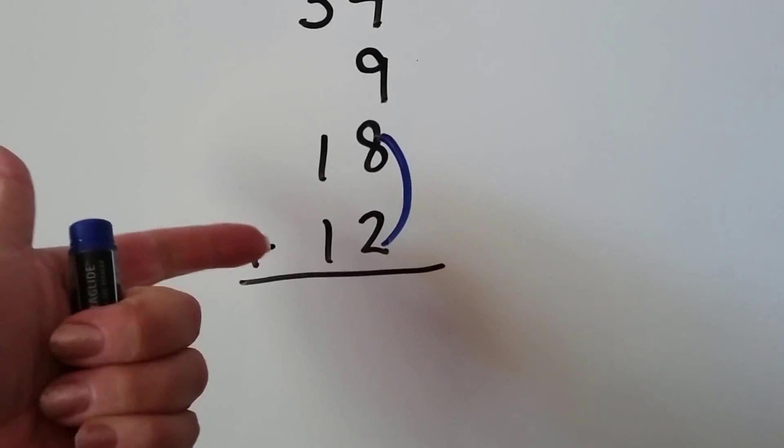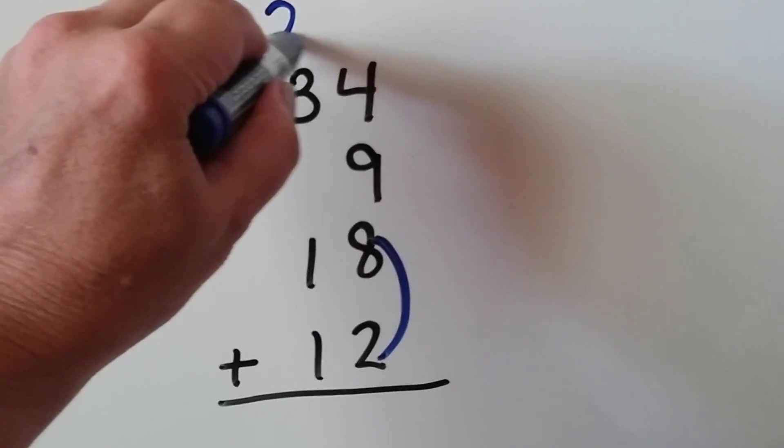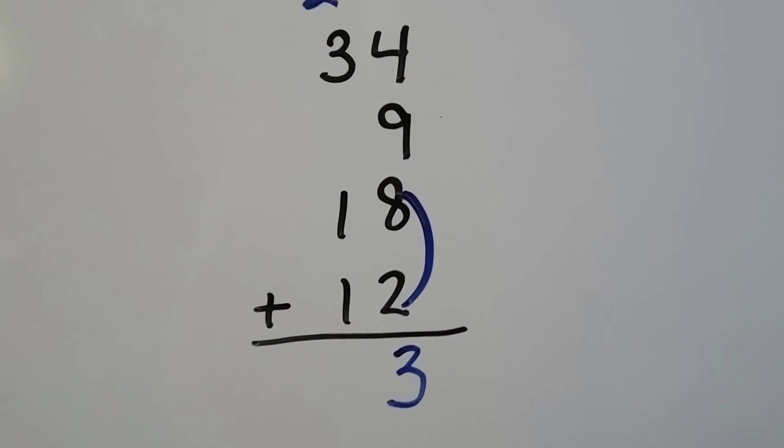And we have 4 more. We have 19, 20, 21, 22, 23. We regroup the 2 up here, and put the 3 down here.